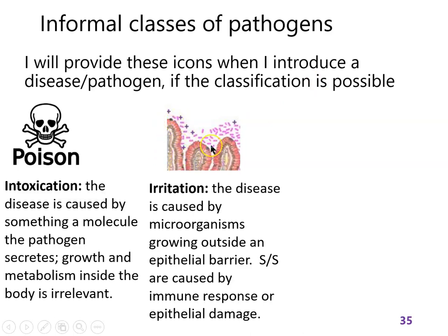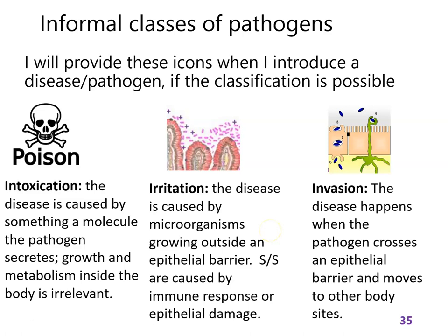What you see here is villi in the intestine with bacteria all over them causing an inflammatory response. Sometimes I'll call this 'inflammatory' — in these cases the microorganisms grow on or in a person but don't cross an epithelial barrier. They're in the lumen of a gut or on the skin, and the signs or symptoms we see are usually caused by the immune response.